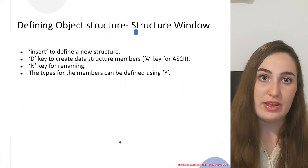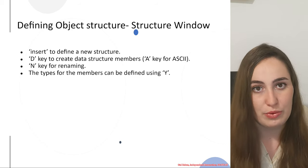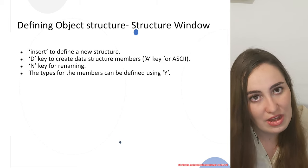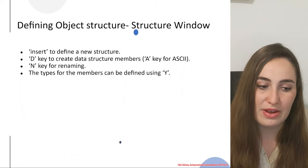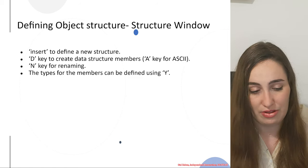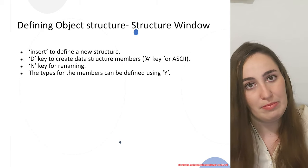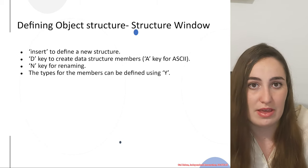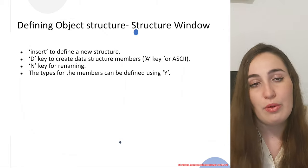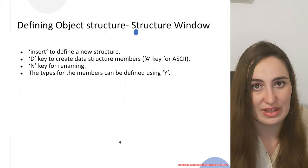If we want to define an object structure in IDA, we can do it using the structure window that I will shortly show in the demo. We can press Insert to create and define a new structure. We can rename the structure using N, and we can add data structure members using D or A, depending on if you want ASCII or not. You can also use Y in order to change the member types to whatever you want — it can be another structure or some basic types. Now we will see a short demo to show you how to interact with IDA and to create the structure that you need.